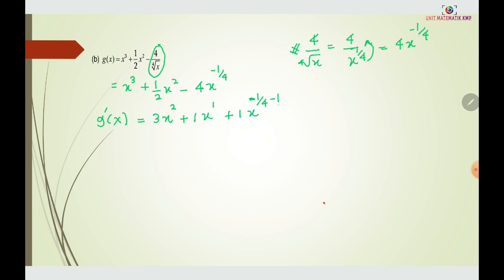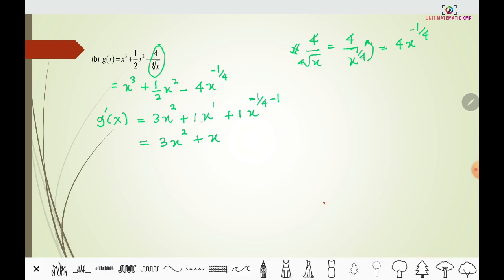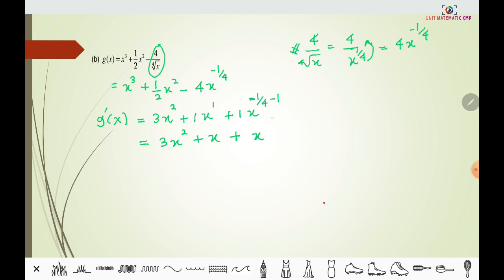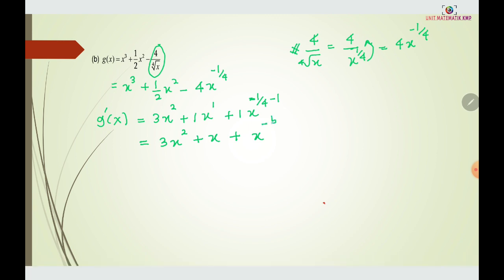To compute the new exponent: -1/4 minus 1, we write 1 as 4/4, so it becomes -1/4 minus 4/4, which equals -5/4. Because the power is negative, we bring x^(-5/4) back to the denominator.